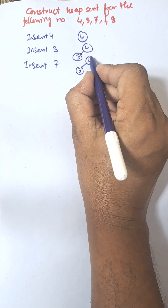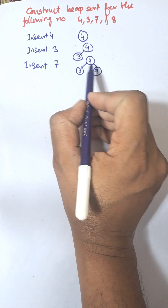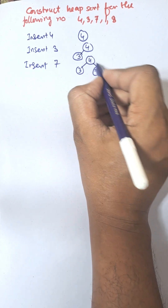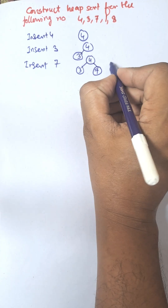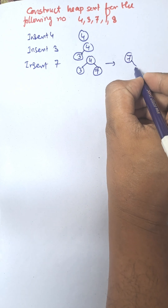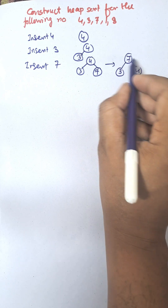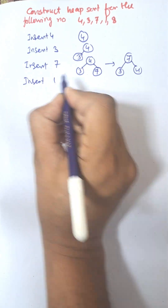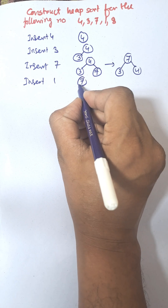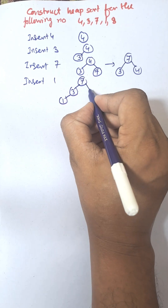We need to make it a complete binary tree, but according to max heap the value of the root node must be greater than the value of the child. So we need to swap 4 and 7. We will get 7 and 4 swapped. Now insert 1; 1 will be the left child of 3.